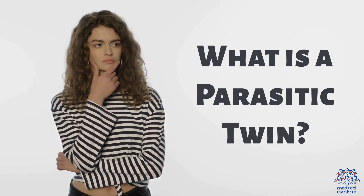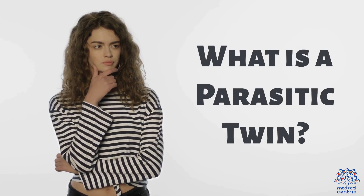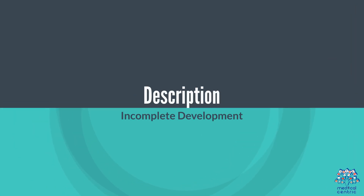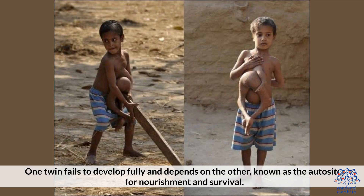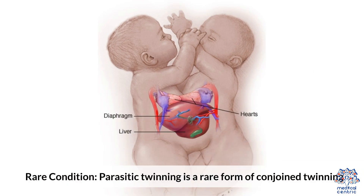What is a parasitic twin? Incomplete development: one twin fails to develop fully and depends on the other, known as the autocyte, for nourishment and survival. Parasitic twinning is a rare form of conjoined twinning.